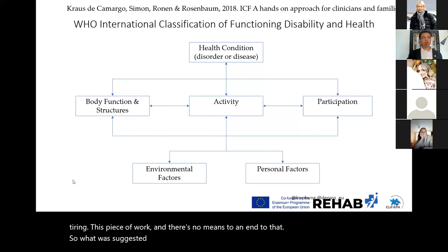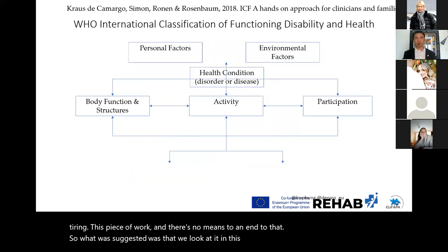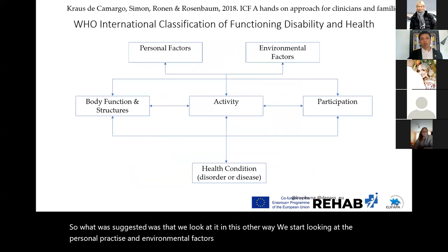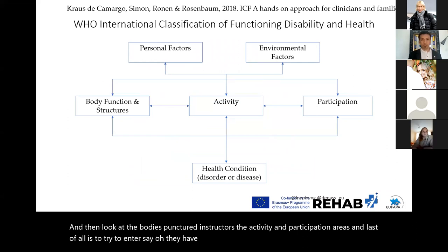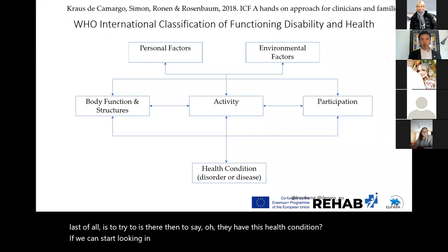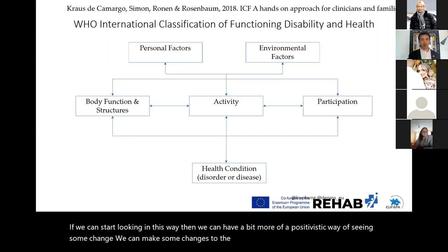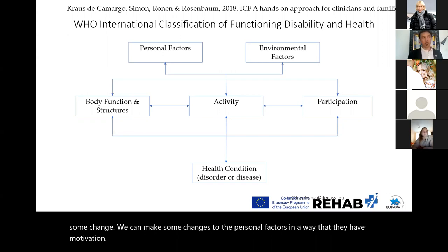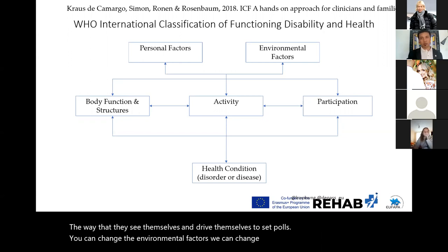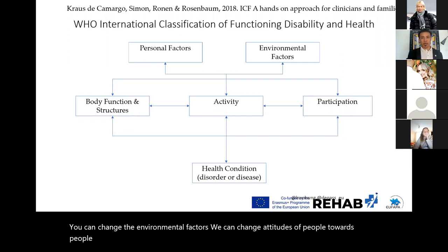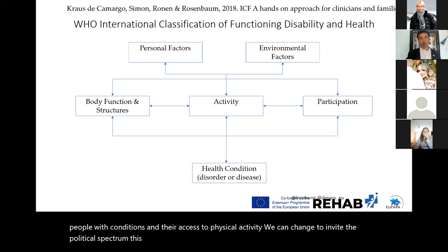The trouble with that is that the health condition — as we heard from earlier presentations — ASD doesn't really change. You can just work with people to change their functioning. So if you look at the health condition first, you're not really going to be able to make any change. It becomes a very tiring piece of work with no means to an end. So what was suggested was that we look at it the other way: start looking at the personal and environmental factors first, then look at the body functions and structures, activity and participation areas, and lastly note the health condition. This gives us a more positivistic way of seeing change. We can make changes to personal factors in a way that motivates physical activity and drives goal-setting. We can change environmental factors, attitudes of people toward those with conditions, access to physical activity, and even the political and structural environment.